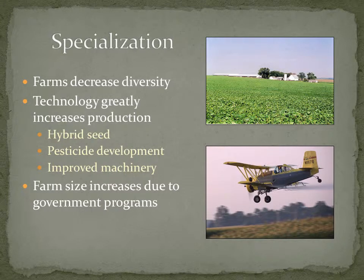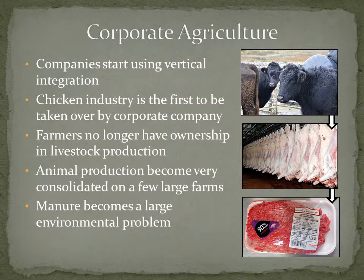Now we're in the time period of specialization where farms are not very diverse. Many farms in Illinois are growing corn and soybeans only — the livestock is gone, and they're very specialized in what they do. With the technology of seed and pesticide development and improved machinery, farms are large and very dependent on government farm programs to survive. The corporate agriculture side has affected the livestock industry more than the crop industry, as packing companies have started to control all steps in the process.